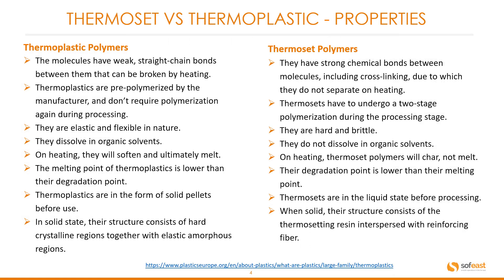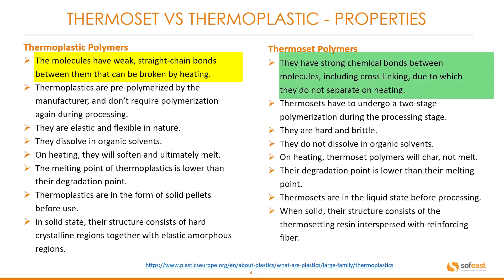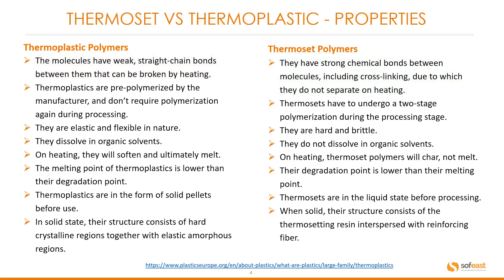Let's have a look at the properties between thermoplastics and thermosets. Under the thermoplastic, the molecules have weak straight chain bonds between them that can be broken by heating. Conversely, thermoset polymers have strong chemical bonds between molecules including cross-linking, due to which they do not separate by heating. Another property comparison: thermoplastics are elastic and flexible in nature, whereas thermosets are hard and brittle.